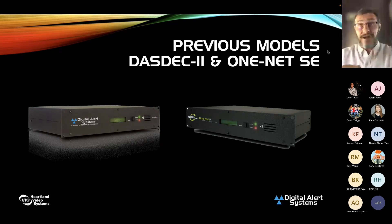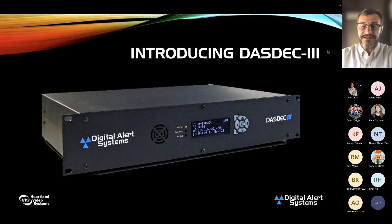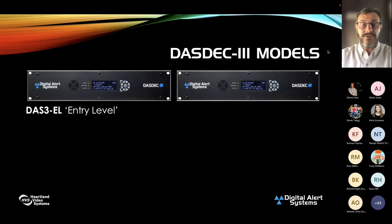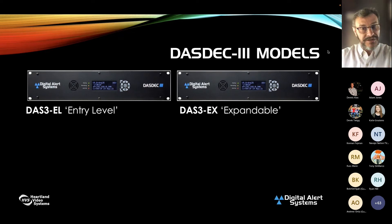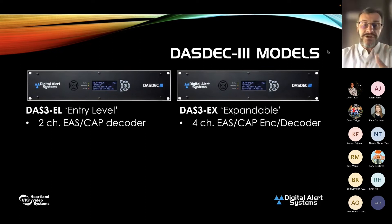What we've done is blended it all together into what we call the DASDEC 3. The singular focus going forward is the new DASDEC 3. We created two different hardware versions: one is the DASDEC 3 EL, for entry level — the low-cost entry-level product. The other is the EX, the expandable model that gives more flexibility. The EL is a two-channel EAS CAP decoder only. The minimum FCC compliance requirement is monitoring at least two over-the-air stations, so the EL covers that. The EX is a four-channel encoder-decoder system.